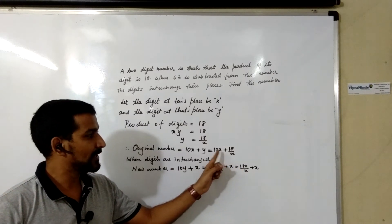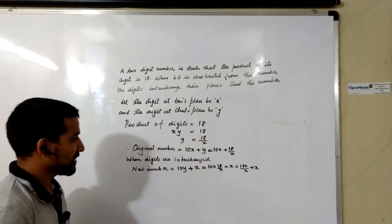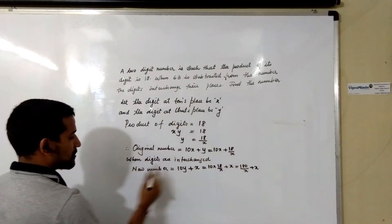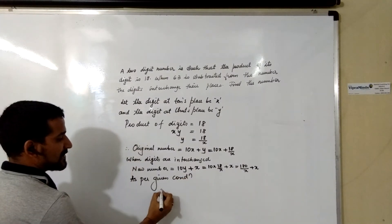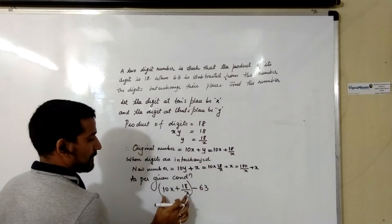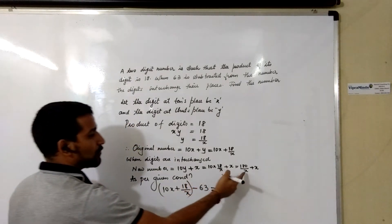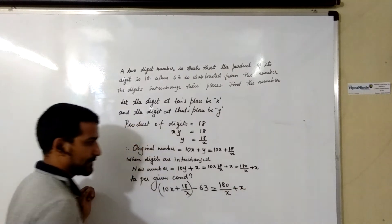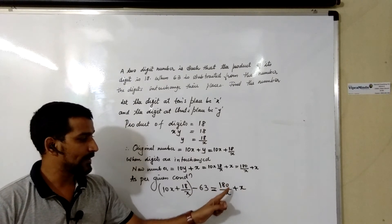Earlier the original number was 10X + 18/X. When the digits are interchanged, it becomes 180/X + X. As per the given condition, if we subtract 63 from the original number, the digits get interchanged. So the equation is: 10X + 18/X − 63 = 180/X + X.